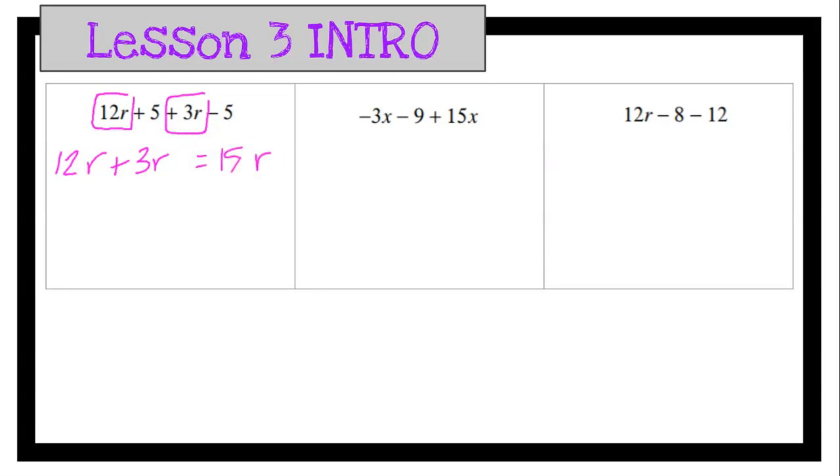12R plus 3R would be 15R. If I have 12 rabbits, and I add three more rabbits, I now have 15 rabbits.